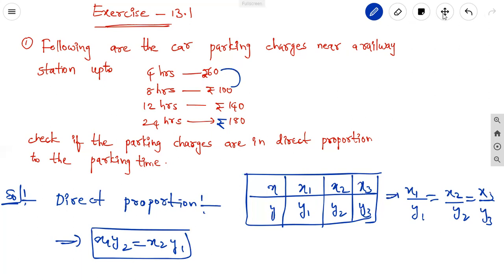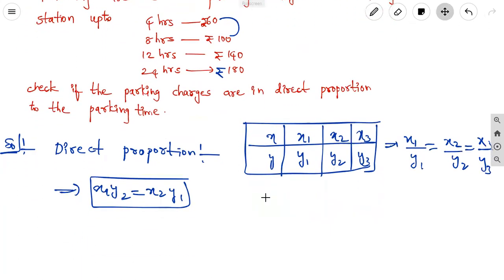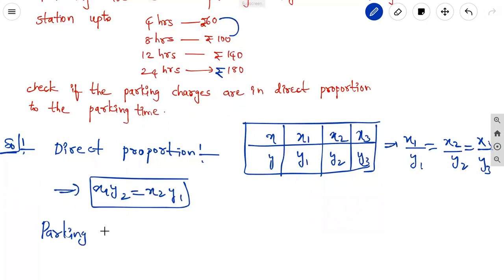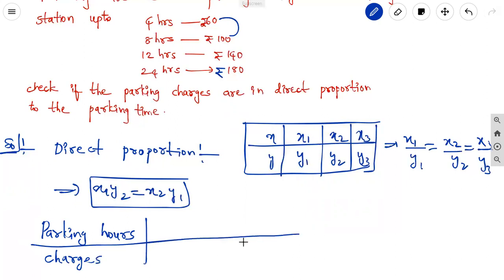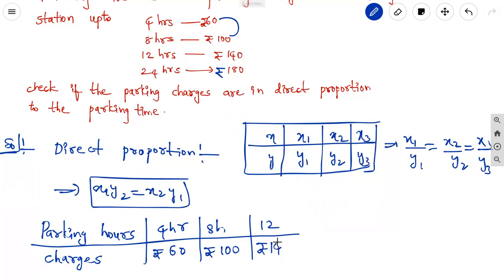First, we write the given data in tabular form. The columns are: parking hours and parking charges. The data is: 4 hours — 60 rupees, 8 hours — 100 rupees, 12 hours — 140 rupees, 24 hours — 180 rupees.